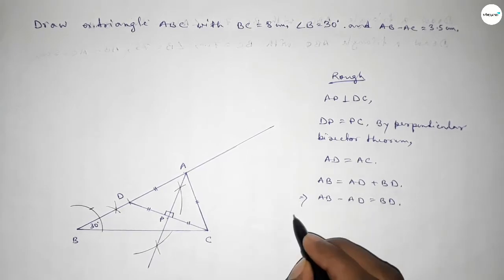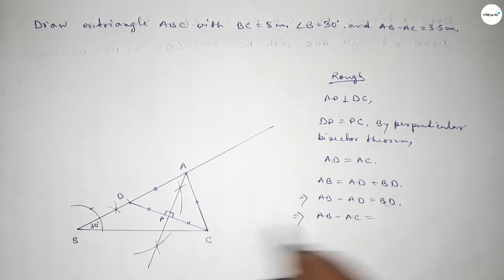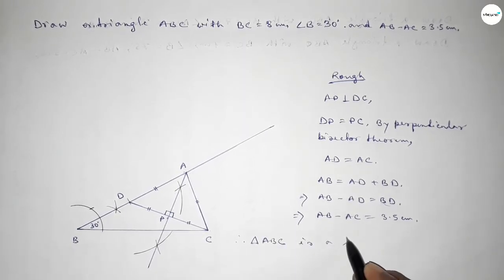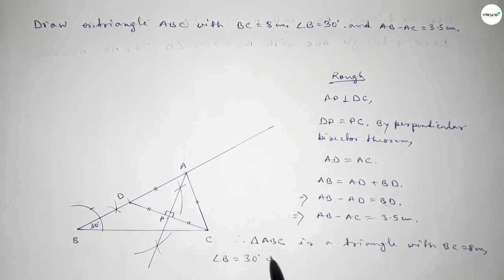So implies that AB minus AD equal to BD. And we know that AD equal to AC, so putting here AC, and BD equal to 3.5 centimeter. That's the proof.